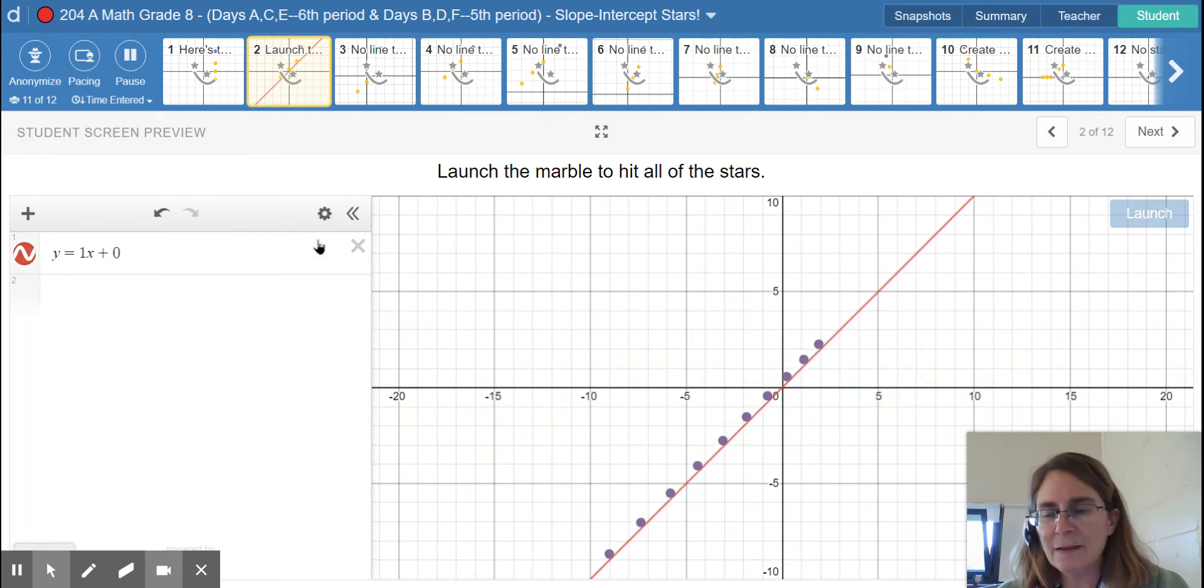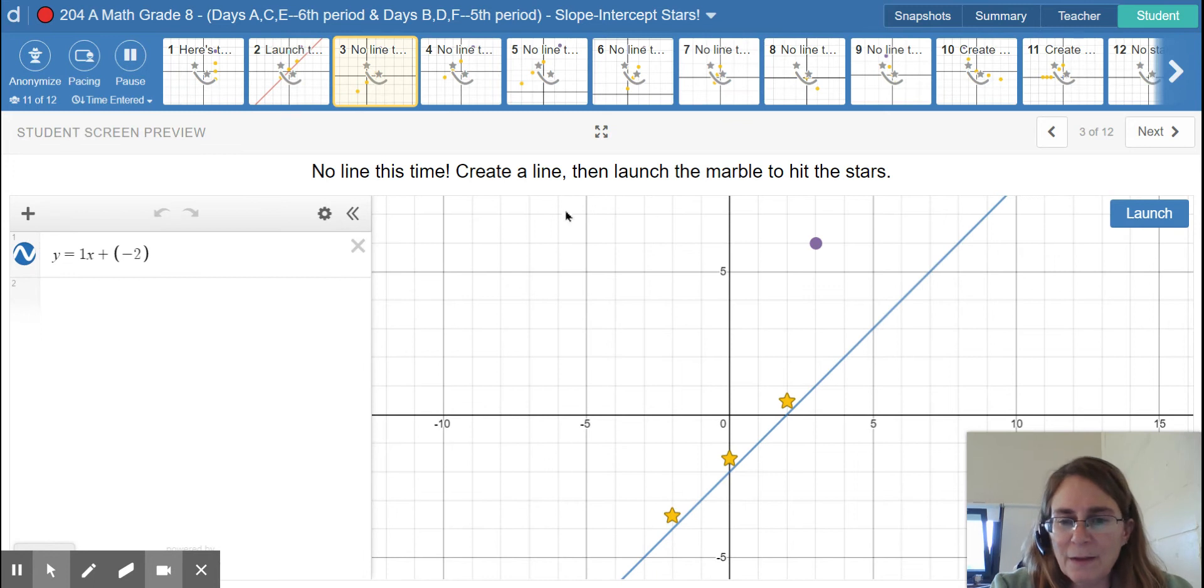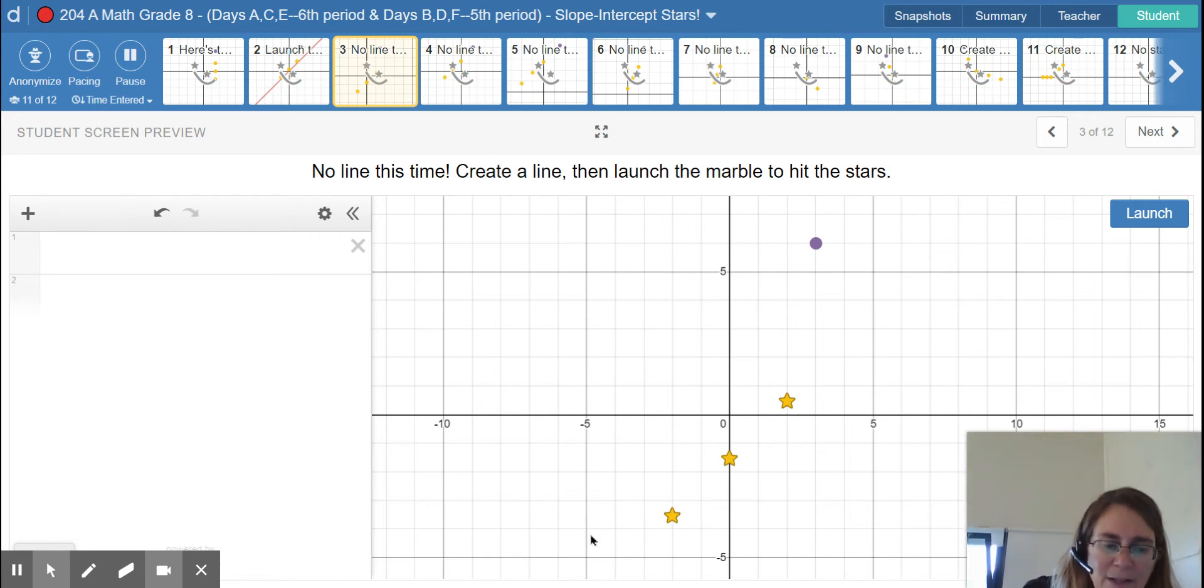Now here's where it gets interesting. On this screen, you don't have a line, so you're going to make an equation in slope-intercept form so that it has the line on the graph, and it'll direct the marble to hit the stars.